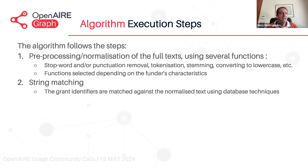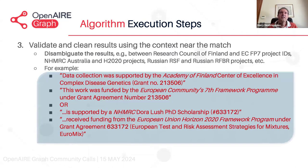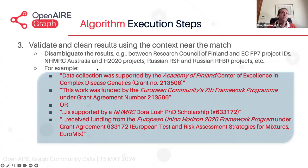Then we have a cleaning and validation stage where we throw away links that are not relevant and focus on those that are actual acknowledgements to projects in a publication. One thing we have to be careful about is to disambiguate results. For example, some project IDs of the Research Council of Finland are identical to FP7 projects, or some NHMRC projects in Australia are similar to Horizon 2020 projects. Here's an example: 'Data collected was supported by the Academy of Finland, grant number 213506' — but this could also be 'European Community Seventh Framework Programme, grant number.' We disambiguate by looking at the text around the match.